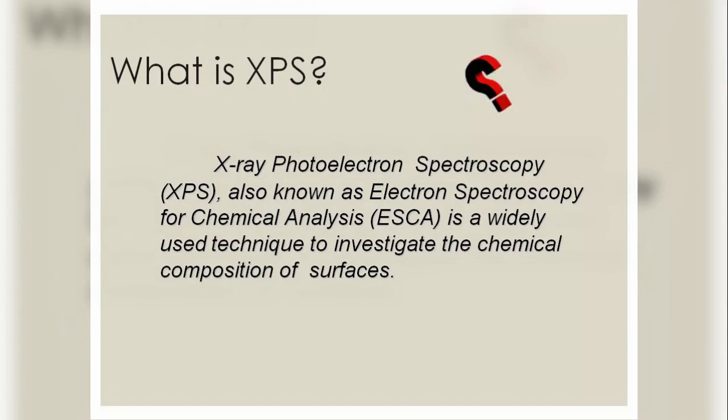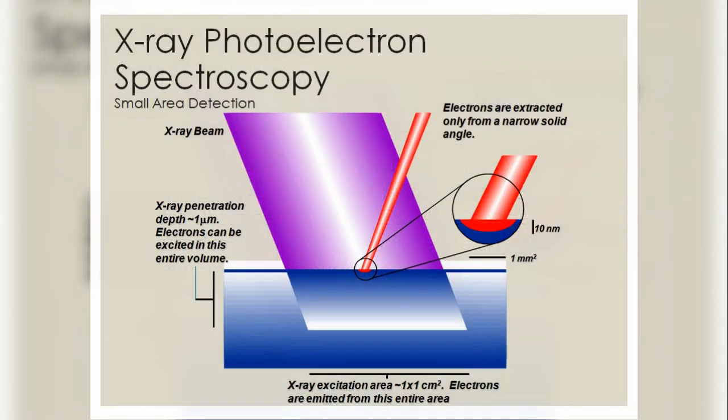So we will see about what is XPS. X-ray photoelectron spectroscopy, also known as electron spectroscopy for chemical analysis, is a widely used technique to investigate the chemical composition of surfaces. In X-ray photoelectron spectroscopy, as the name suggests, we are going to pass the X-ray beam and the electrons are extracted only from a narrow solid angle.